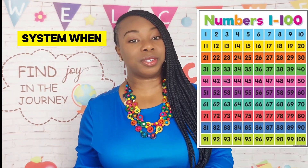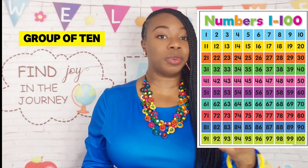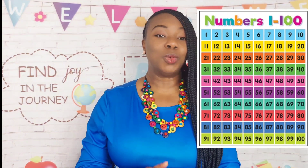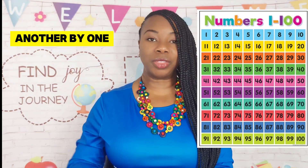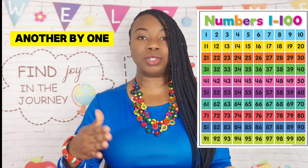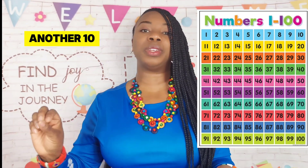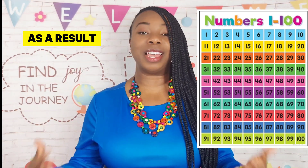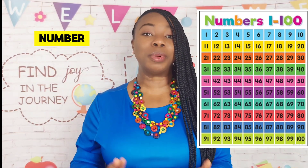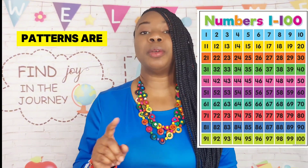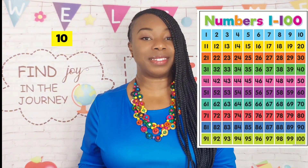In our counting system, when we finish a whole group of 10, we start counting another by 1, 2, 3 until we get to another 10. As a result, our number system and our number patterns are based off of the number 10.